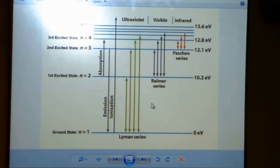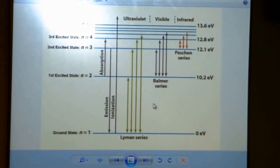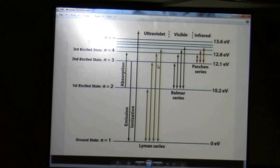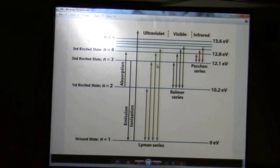If you're going up, it's absorption. If you're coming down, it's emission. And again, it comes out in the ultraviolet, visible, and infrared for those three series.